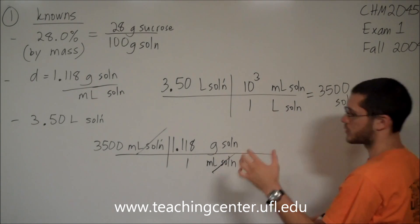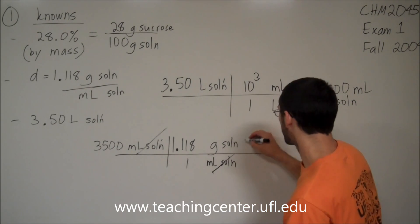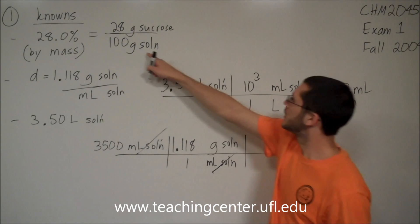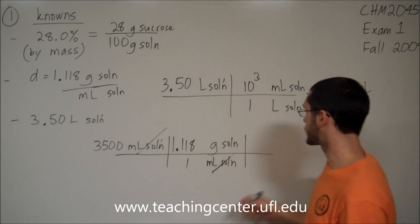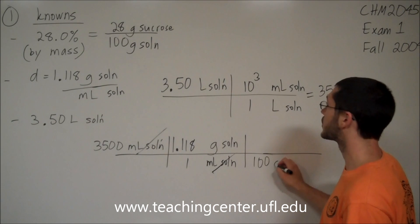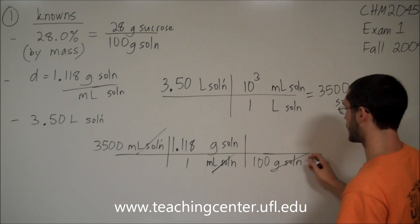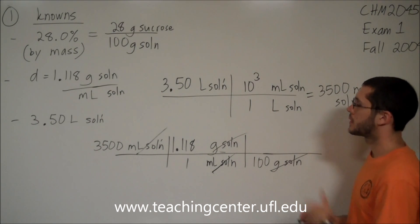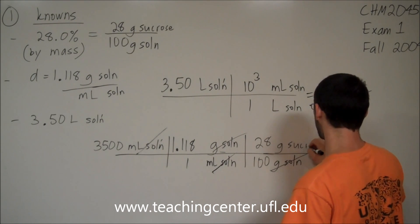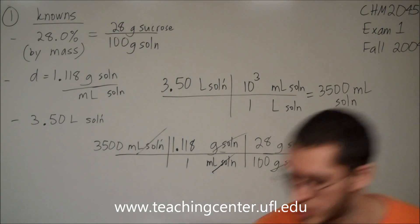But the question wanted me to get grams of sucrose. So how do I go from grams of solution? Ah, look at that. Grams of solution to grams of sucrose. So I'm going to use that ratio. 100 grams of solution. I have to put grams of solution on the bottom so that grams of solution is canceled. I'm going to put 28 grams of sucrose up top.